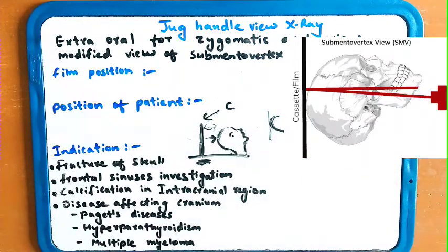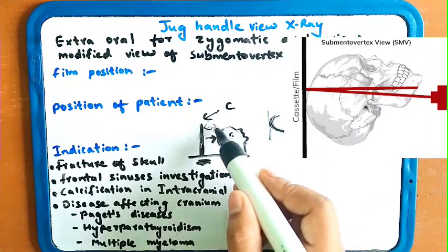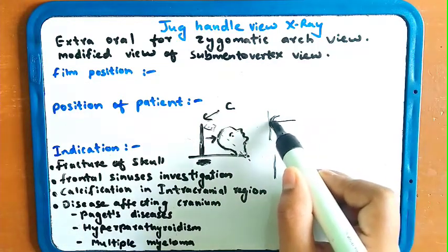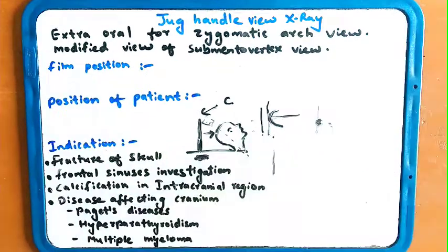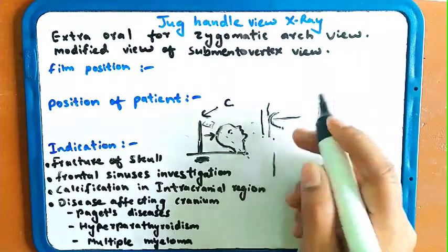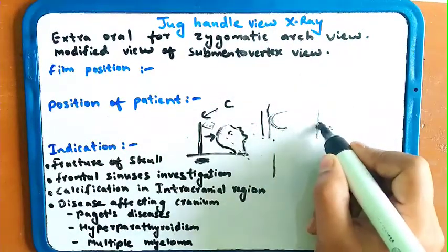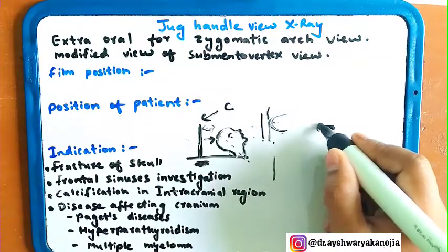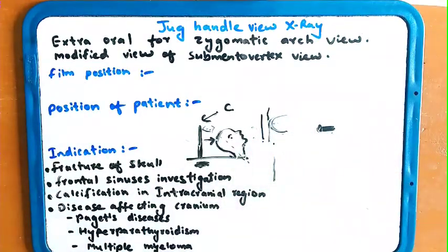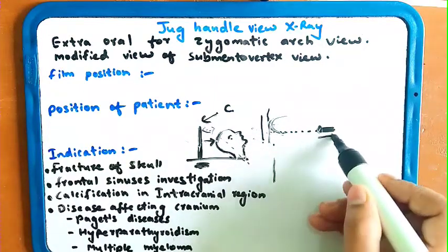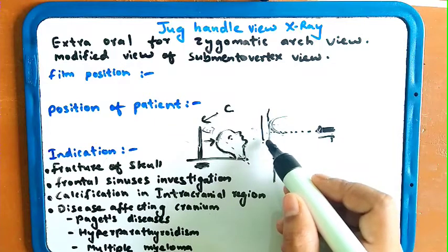Both mid-sagittal planes should be perpendicular to the plane of the film. The mid-sagittal plane will be perpendicular to the film. The cone is brought close to the skull, and it will also be perpendicular to the film. The X-ray rays will pass from the source, hit the cassette and the film.